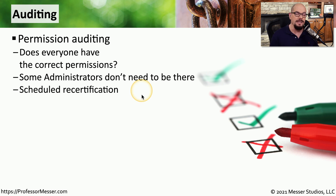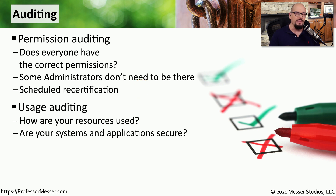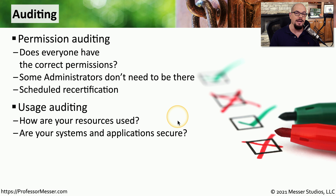This is a process that should occur regularly, so you might want to set up one-month, three-month, and six-month checkups for your network. Once we have the user policies in place, it would be useful to see how those policies are being followed. You might want to look at different resources on the network and determine how those resources are being used, and make sure that applications are accessing data in a way that would be considered secure.